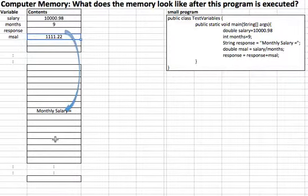response plus M-cell. Response is monthly salary equals, and M-cell is this number here, 1,111.22. So let's create a string that's the combination of these two, just like this line. So let's create it over here.